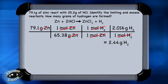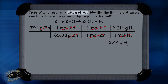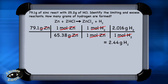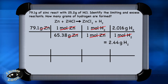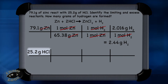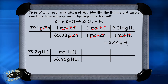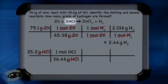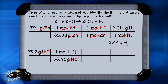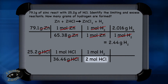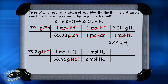Now we do a separate calculation to see how much hydrogen gas we can make from the 25.2 grams of HCl, the other reactant. Start the calculation the same way — take 25.2 grams of HCl and put it in the upper left-hand corner, then convert from grams of HCl to moles of HCl using the molar mass of HCl, which is 36.46. In the next step, bring down the units of moles of HCl and go from moles of HCl to moles of hydrogen using the mole ratios from the balanced equation. Notice there's a 2 in front of HCl and an understood 1 in front of hydrogen, so put a 2 here for moles of HCl and put 1 mole of hydrogen here, which enables us to cancel moles of HCl.